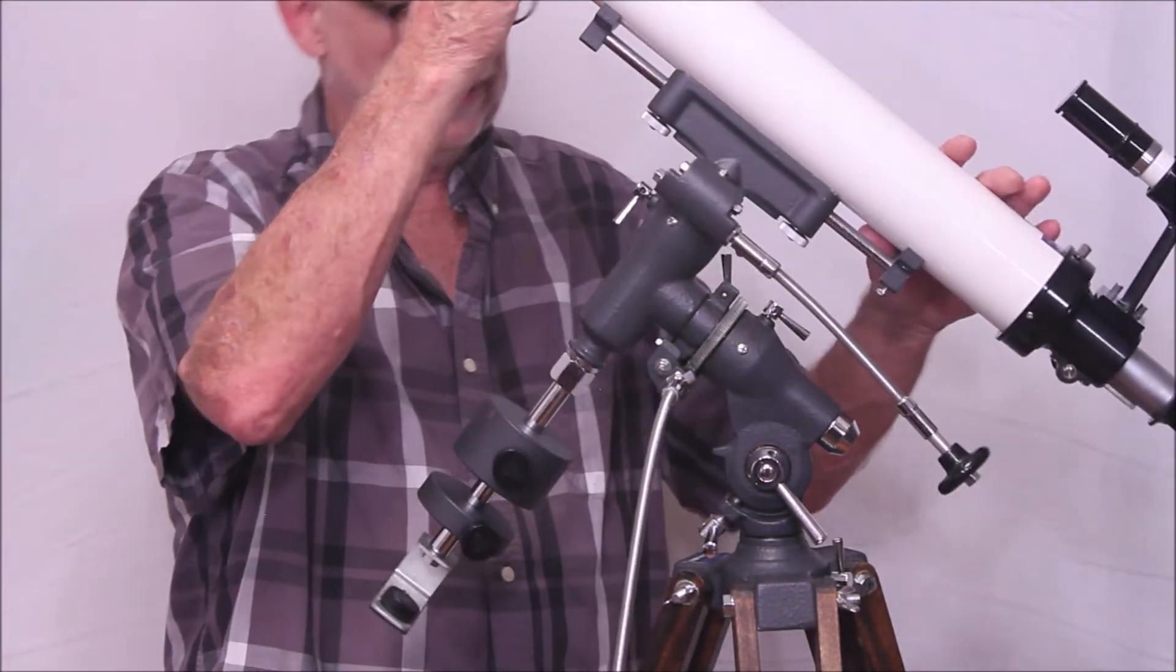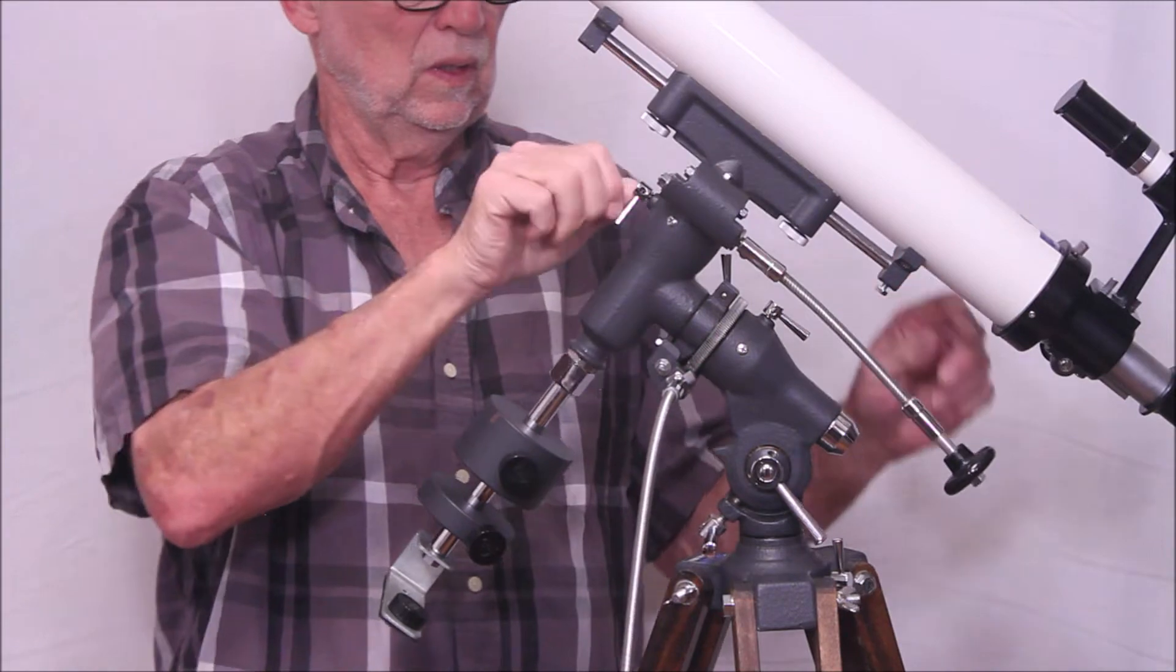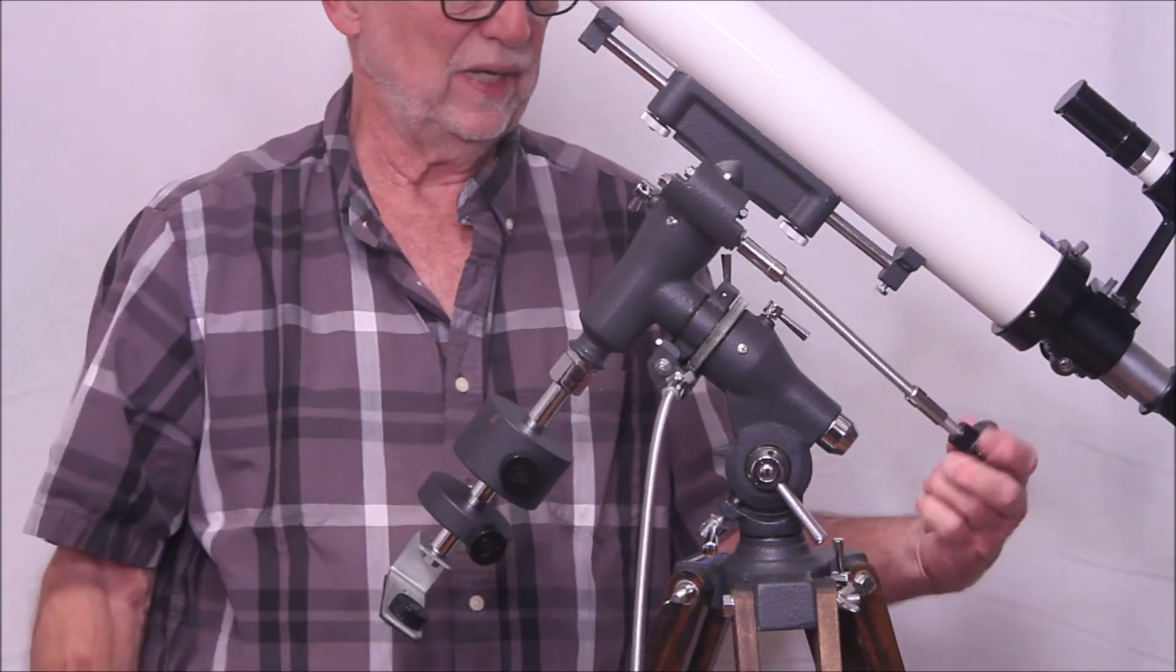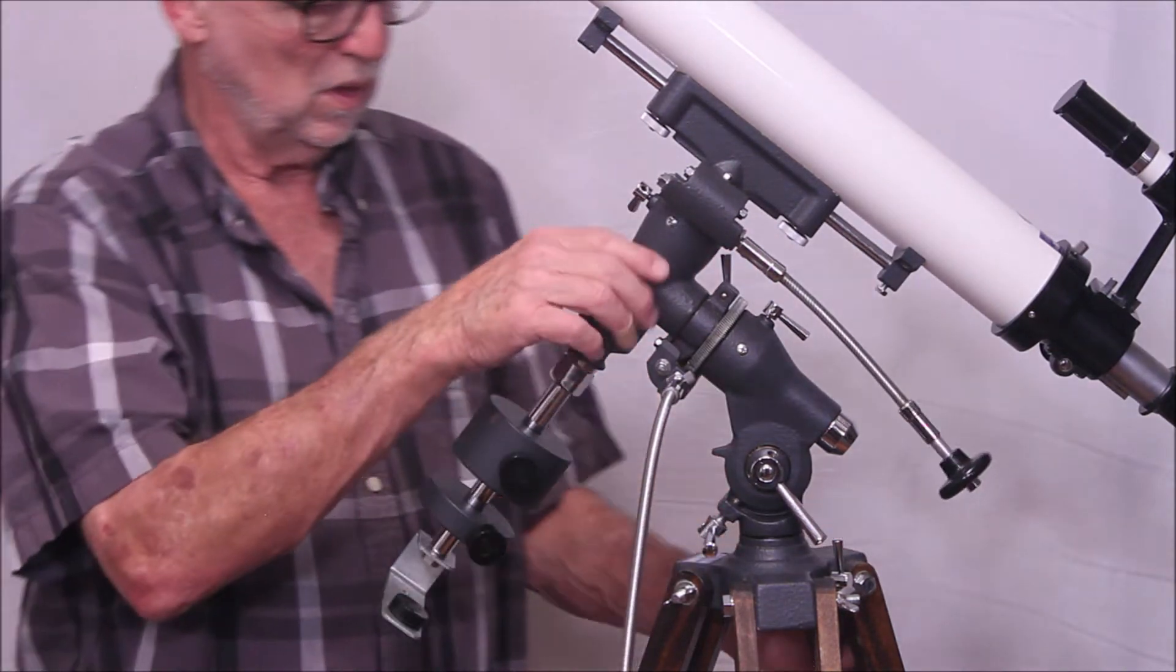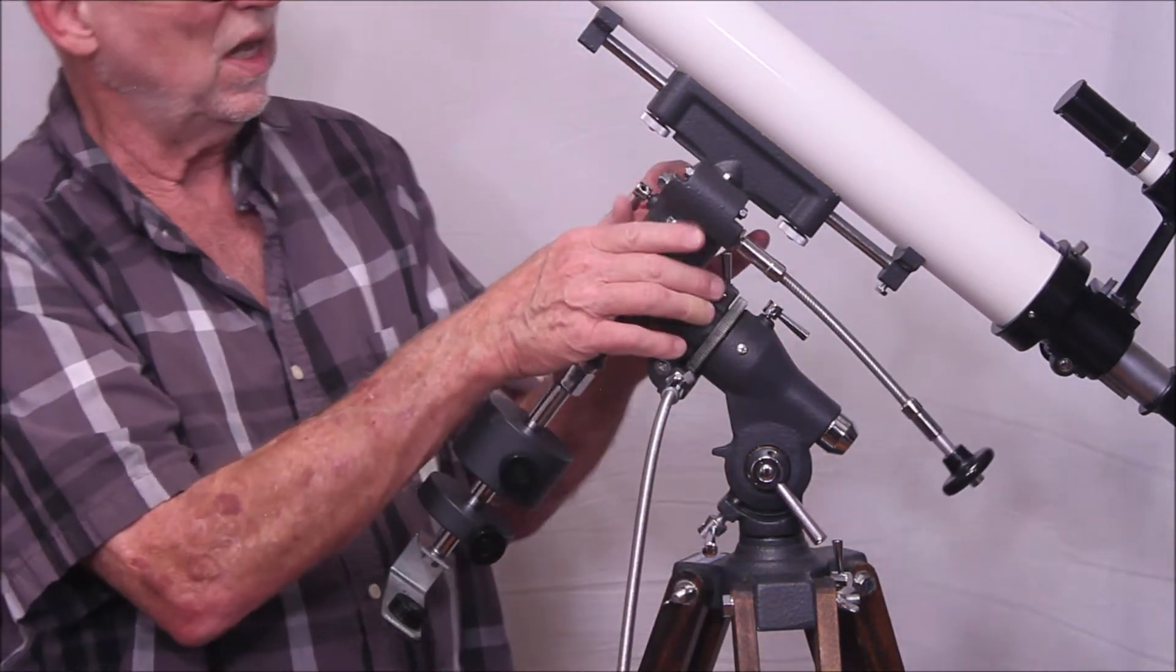Here's your lock for the declination. Also very, very well made. This is all nice and robust cast iron or cast steel of some sort. Very nice and heavy.